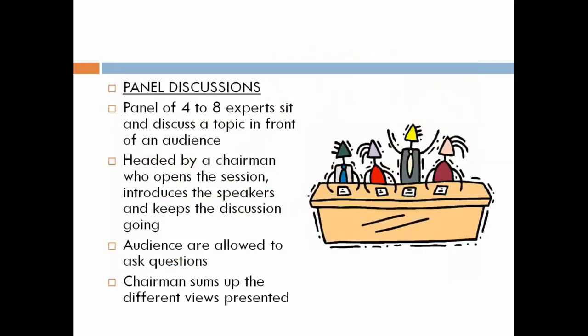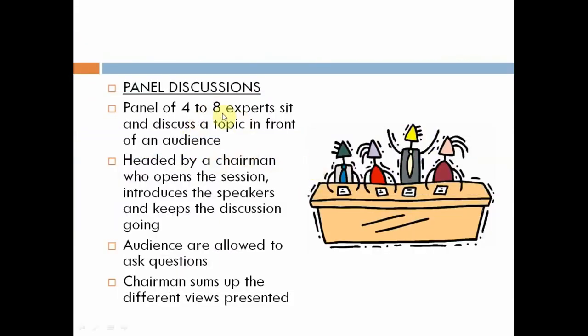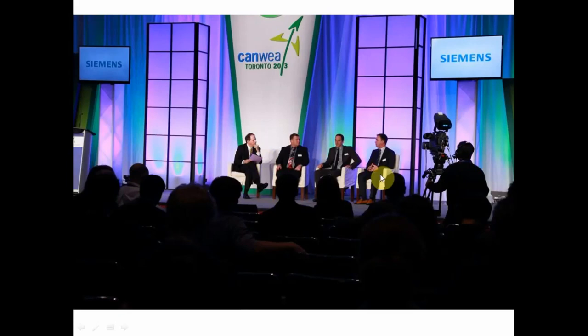A problem with group discussion is that if someone is shy or has poor communication skills, they will lose interest and not benefit. Panel discussion involves four to eight speakers who discuss a topic in front of the audience — unlike symposium, panelists actively discuss with each other. A chairman or moderator opens the session, introduces speakers, keeps the discussion going, and finally sums up the different views. The audience is also allowed to ask questions.